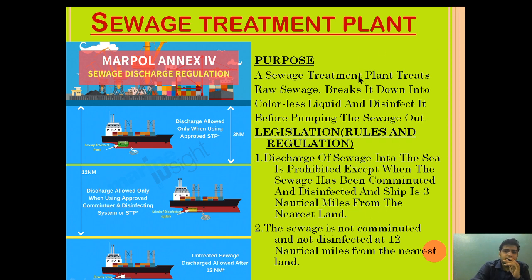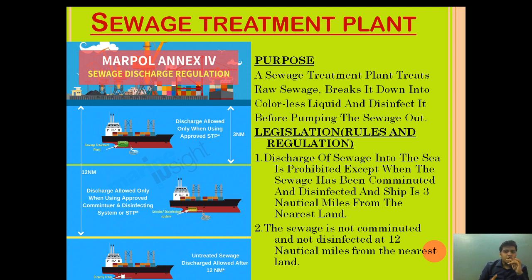The first question asked is: why is a sewage treatment plant required? The purpose of a sewage treatment plant is to treat the raw sewage, to break it down into a colorless liquid, and to disinfect it before pumping out. We need a sewage treatment plant to break the raw sewage, ensure the disposal going out at sea is a colorless liquid, and ensure it is disinfected.